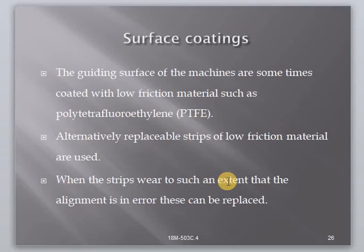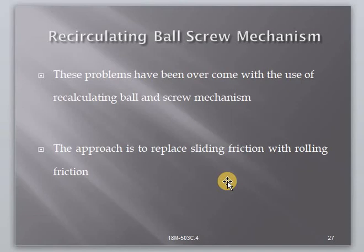Surface coatings: the guiding surfaces of the machine are sometimes coated with polytetrafluoroethylene (PTFE) or use replaceable strips of low-friction material. When these strips wear, they can be replaced with new strips. Lead screws are used to convert the rotary motion of the screw into linear motion of the slide. The lead screw with conventional threads is not suitable for CNC machines due to high friction, poor power transmission, and inaccuracy due to backlash. These problems can be overcome with the use of recirculating ball screw and nut arrangements.